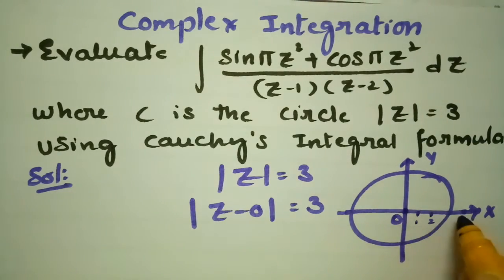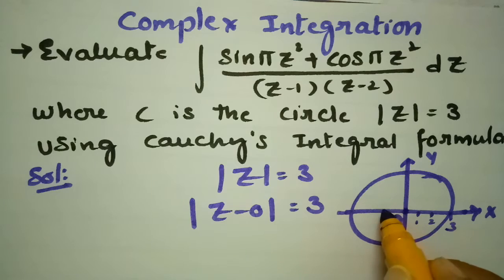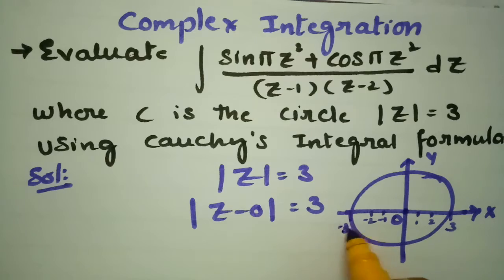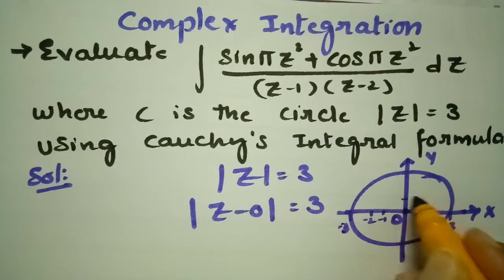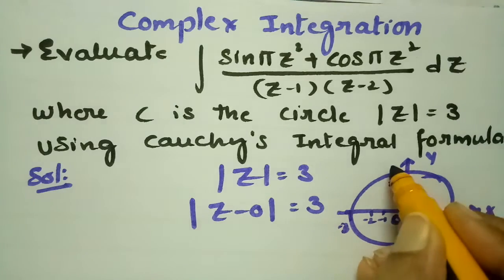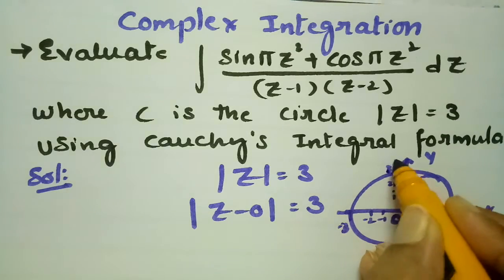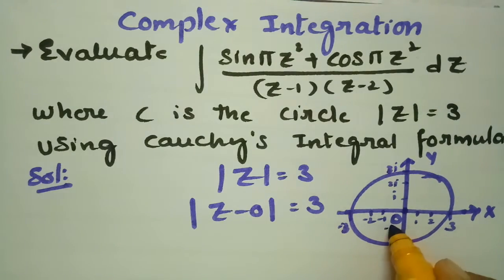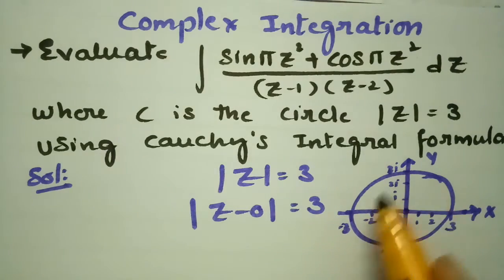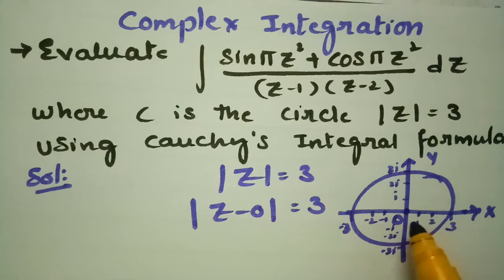On the real axis we have 1, 2, 3 and −1, −2, −3. On the imaginary axis we have i, 2i, 3i and −i, −2i, −3i. So this is a circle with center 0 and radius 3.